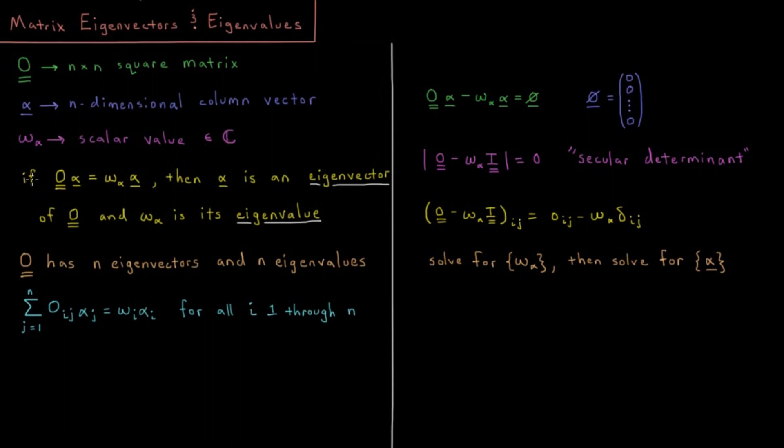In the case that we have the matrix O times vector alpha, if that equals a scalar constant omega_alpha times the same vector alpha,